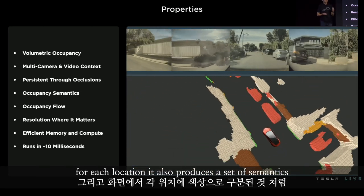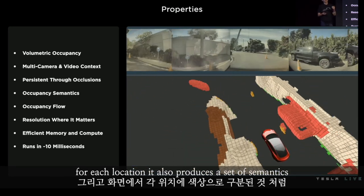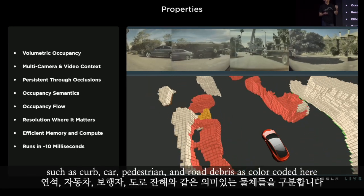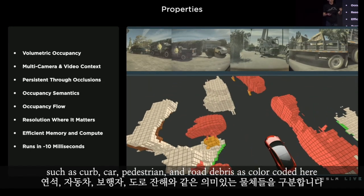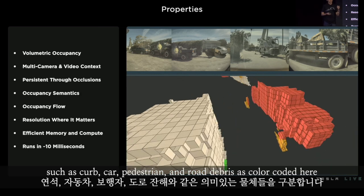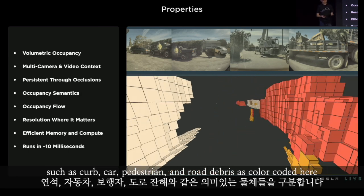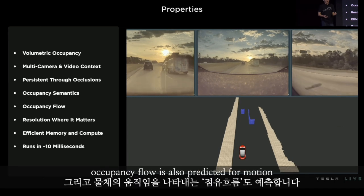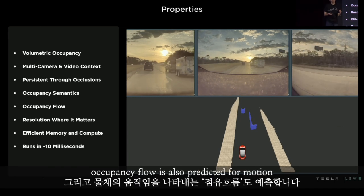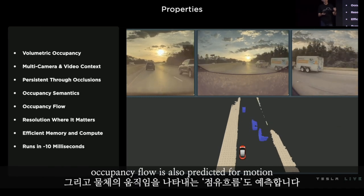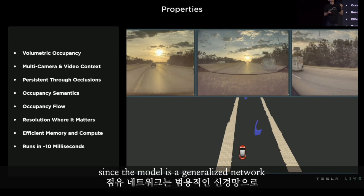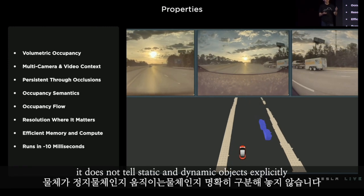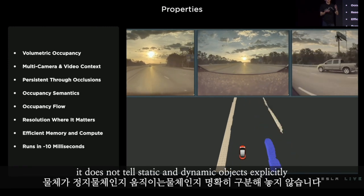For each location, it also produces a set of semantics such as curb, car, pedestrian, and road debris, as color-coded here. Occupancy flow is also predicted for motion. Since the model is a generalized network, it does not treat static and dynamic objects explicitly.